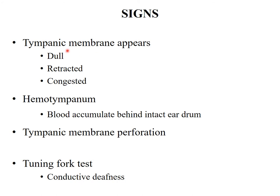Signs: the tympanic membrane may appear dull, retracted, or congested; there may be hemotympanum or tympanic membrane perforation with irregular edges and blood at the edges. Tuning fork tests may show conductive hearing loss. Although rare, if a perilymph fistula develops there will be sensorineural hearing loss, but mainly it will be conductive deafness.